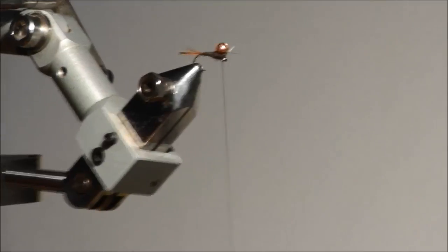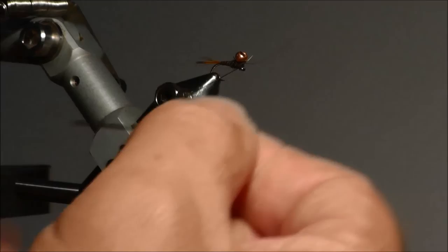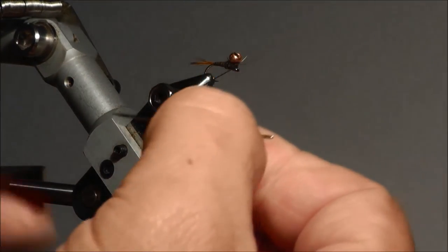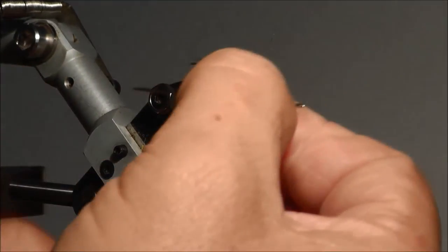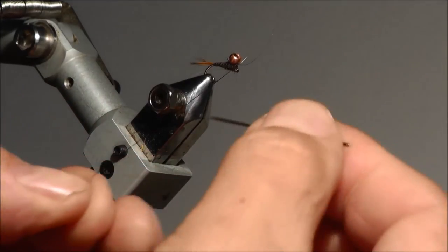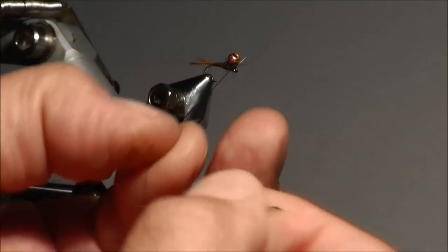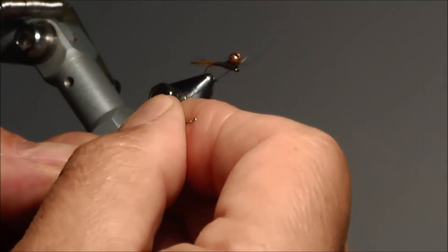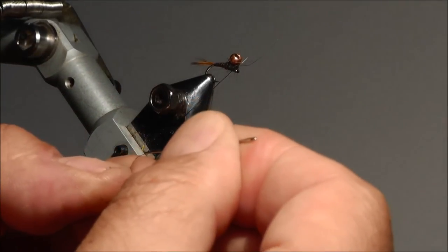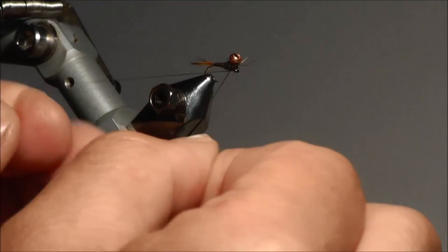Now you have to split the thread. And that's why you need actually a flat thread to make sure you can split the thread. You can also work with a dubbing loop. But it makes your fly more and more bulkier. It's not always easy to do that. Voila. The line is split now.